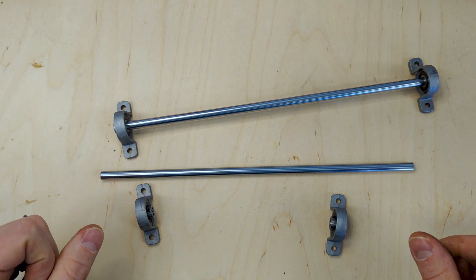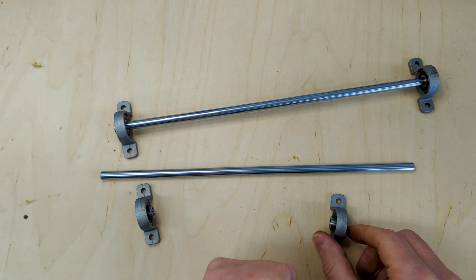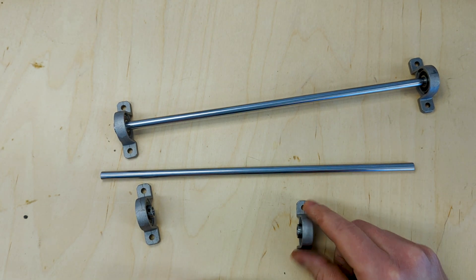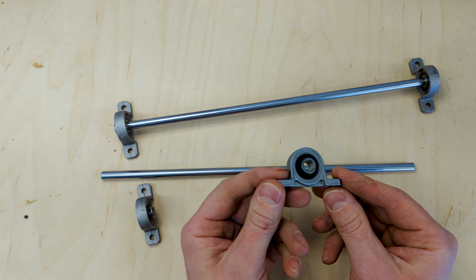What is a pillow block? It's not something that you put your head on. It's something with a ball bearing that you can mount to a surface. So these are examples of pillow blocks.